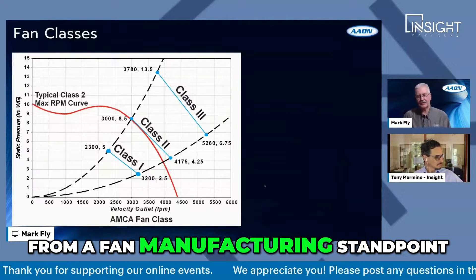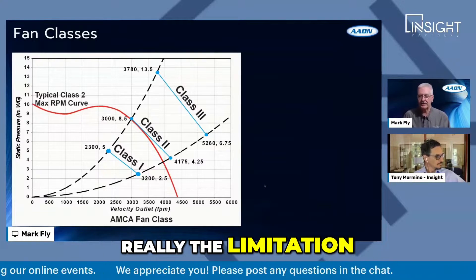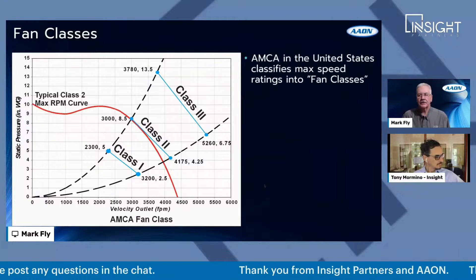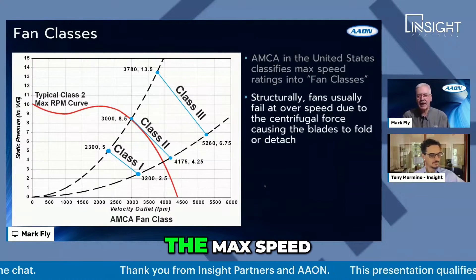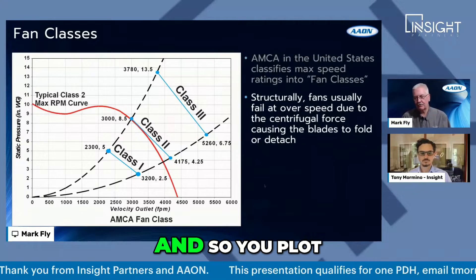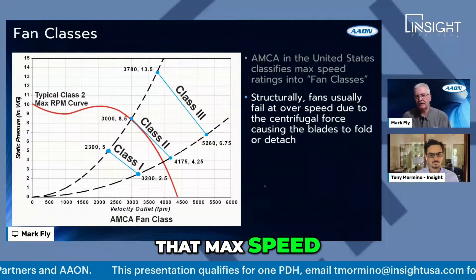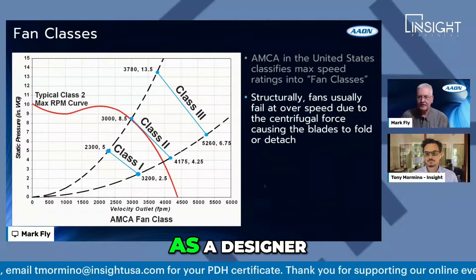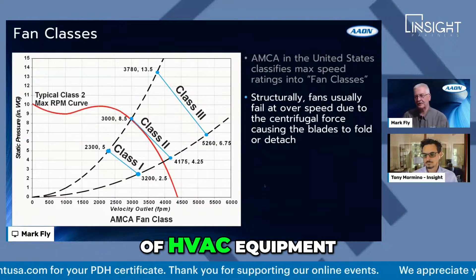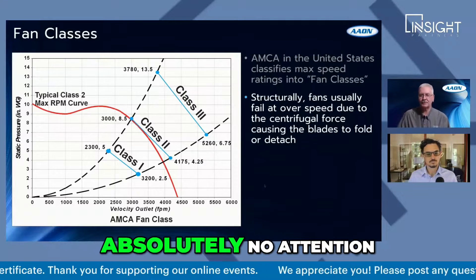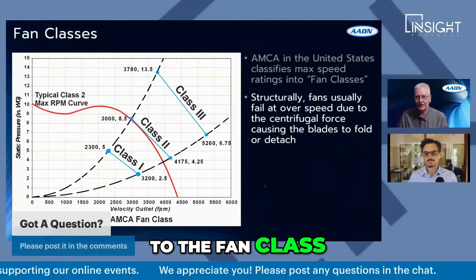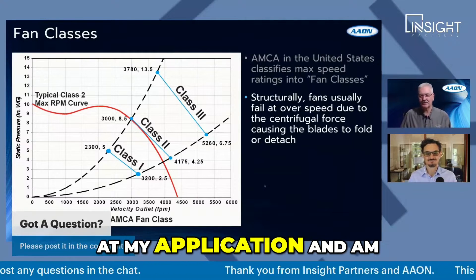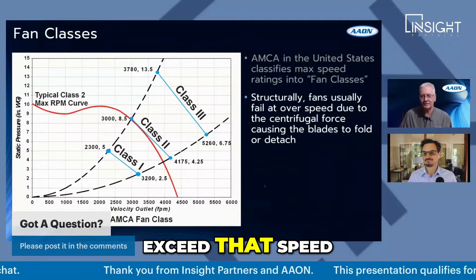From a fan manufacturing standpoint, the real limitation on the fan is how fast we spin it — the max speed. You plot that max speed on this curve and it'll fall into class one, class two, or class three. As a designer of HVAC equipment, I pay absolutely no attention to fan class. I just want to know what speed it is, then look at my application and ask: am I ever going to exceed that speed?